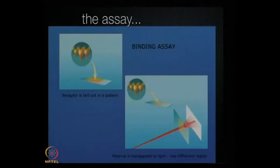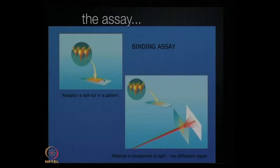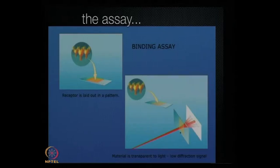Let me show how we can use the principles of diffraction to actually measure the interaction between molecules. Take a piece of glass slide here and put a coating — just one molecular layer thick — in a pattern. This is a grating: lines made up of biomolecules spaced approximately a micron to a micron and a half apart, such that when light is shined through that grating, which is very faint, there's going to be a little bit of diffraction — not much. You could barely see it in this cartoon drawing.